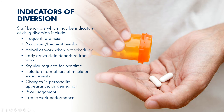Staff behaviors which may be indicators of drug diversion include frequent tardiness, prolonged or frequent breaks, arrival at work when not scheduled, early arrival or late departures from work, regular requests for overtime, isolation from others at meals or social events, changes in personality, appearance or demeanor, poor judgment, and erratic work performance.